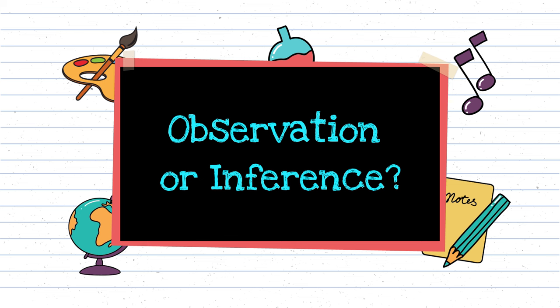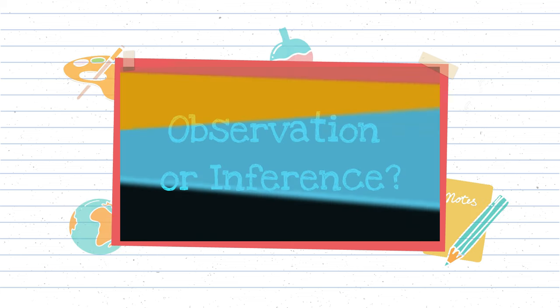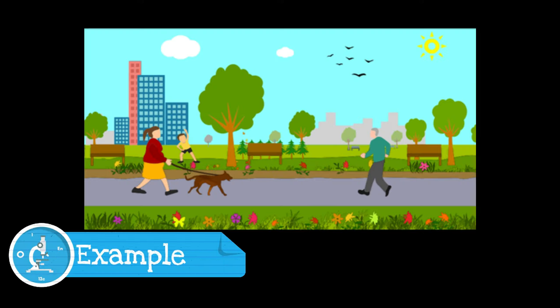Now that you know all about observations and inferences, I'm going to show you a series of photos that are examples of either observations or inferences. Pause the video after each example to come up with your answer. I will reveal the answers so you can see if you get them correct. Example number one. You are walking your dog in the park and you notice a flock of six birds flying overhead. Is this an observation or an inference?